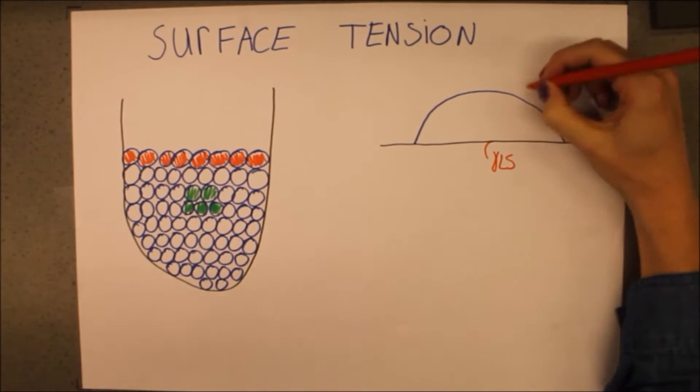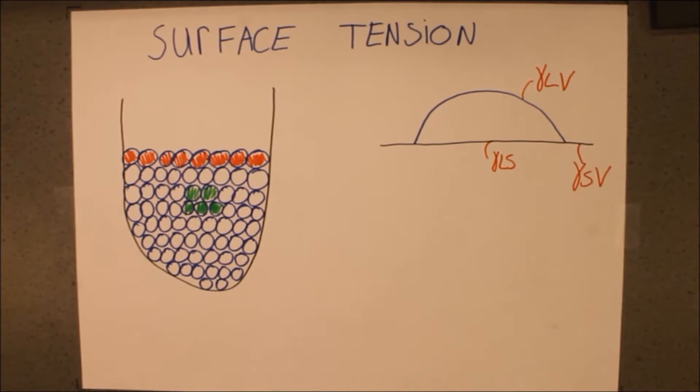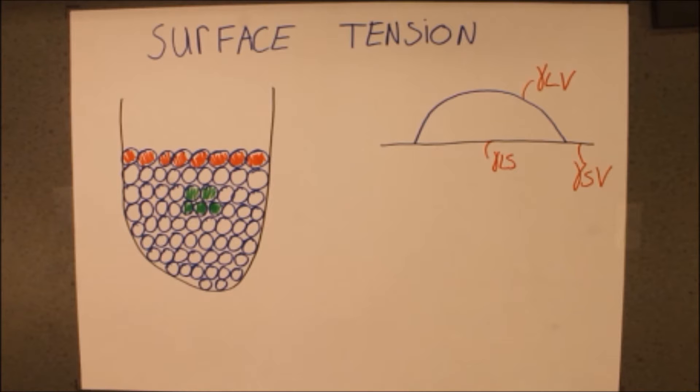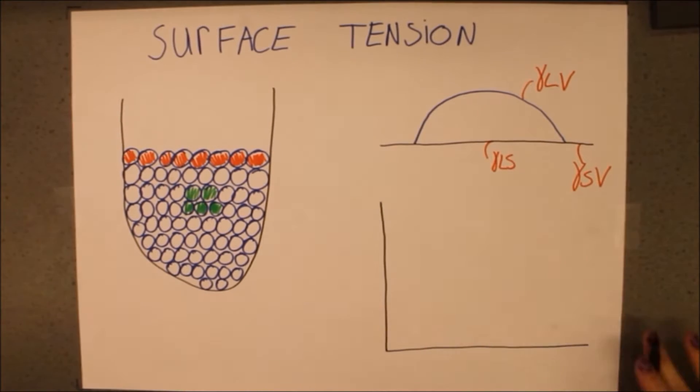If we look at a single water droplet on a solid surface, there are three interfaces between the liquid, solid and vapor phases, leading to three different surface tensions.